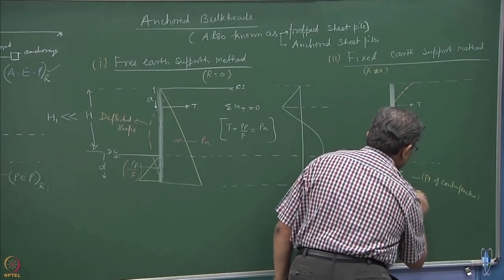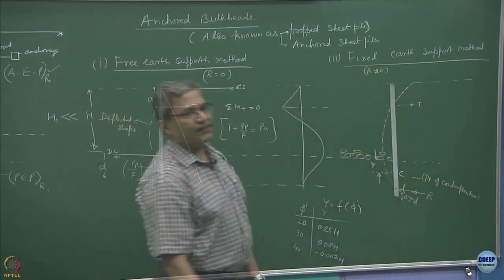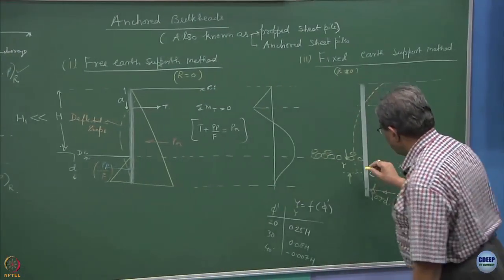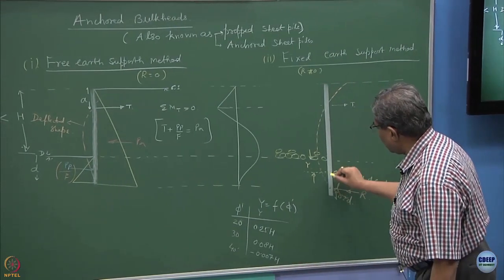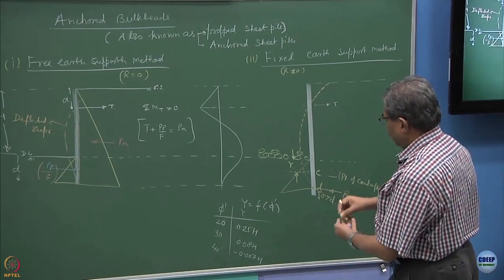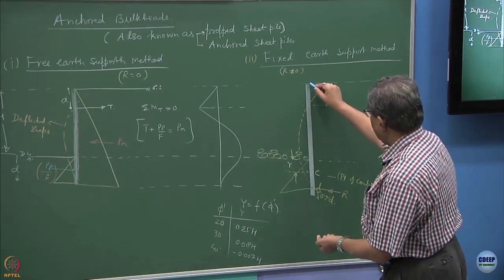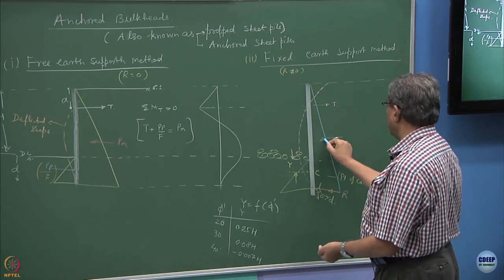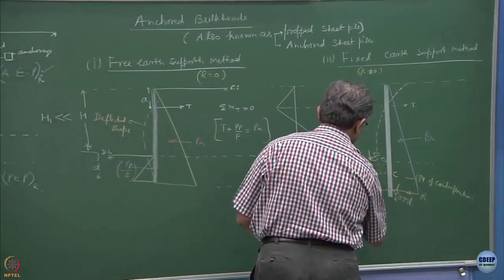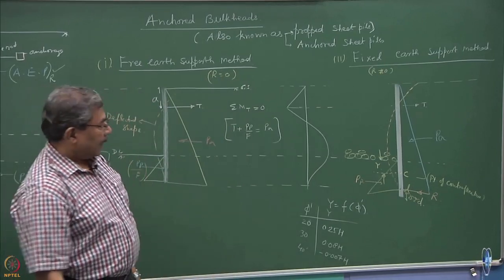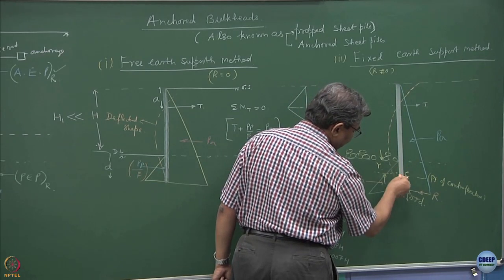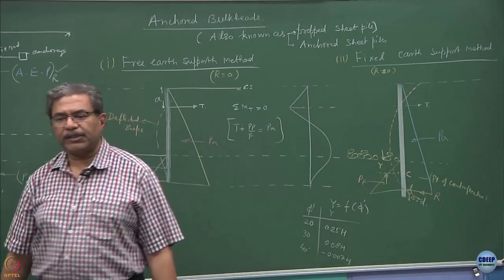So, this is where your net resultant r is acting. You can draw the pressure diagrams. This portion up to r is passive earth pressure, from here up to r is active earth pressure and this point contraflexure which is at depth of y is somewhere in between.